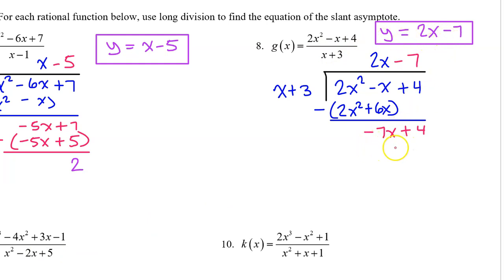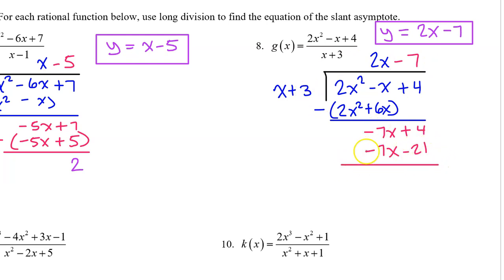Finishing the long division: take negative seven and multiply times x plus three. Negative seven times x is negative seven x, and negative seven times three is negative twenty-one. Then subtract — these cancel, and four minus negative twenty-one is like four plus twenty-one, which is twenty-five. That would be the remainder.